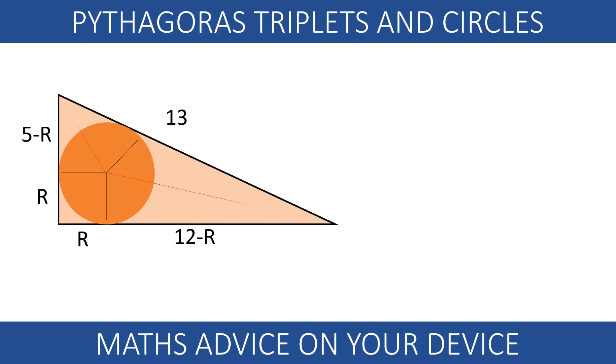Similarly, we can use the next Pythagorean triplet. A triangle with sides 5, 12, 13. The sides 5-r and 12-r make up for the hypotenuse, length 13. Solving the equation, we end up with the value of r equals 2.